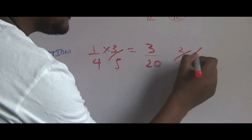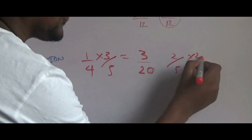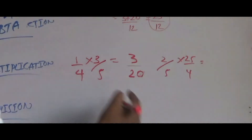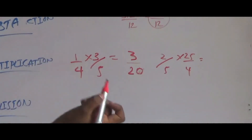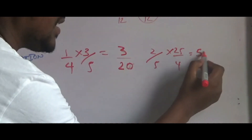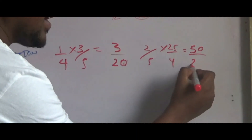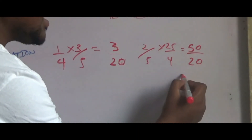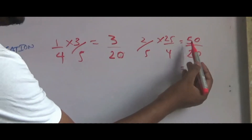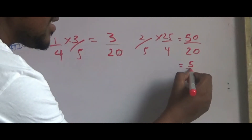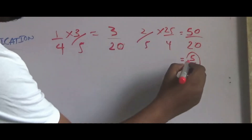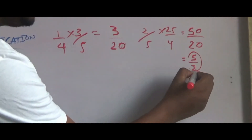Now, 2 over 5 times 25 over 4. So 2 times 25, and if you simplify, you can see 5 over 2 will be the answer.